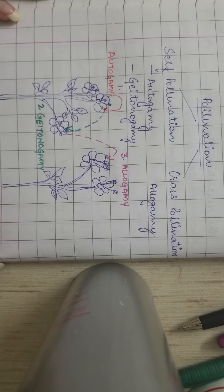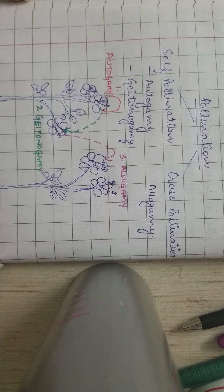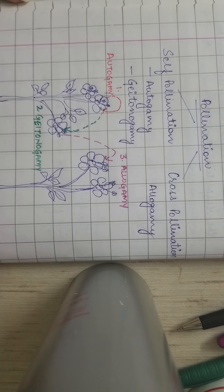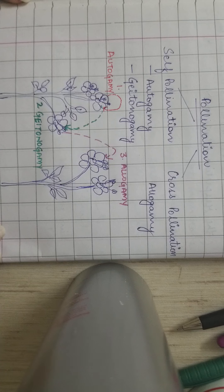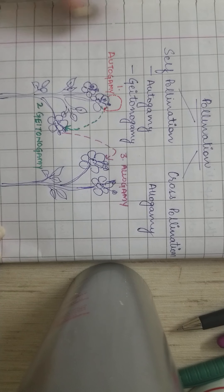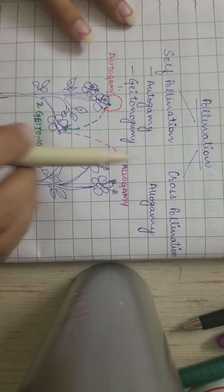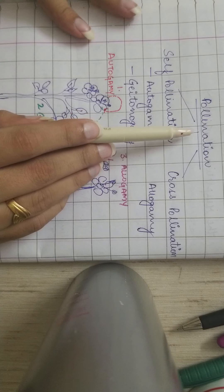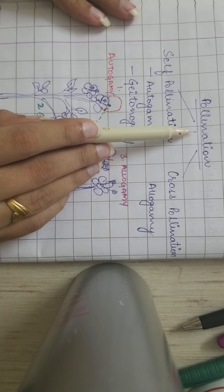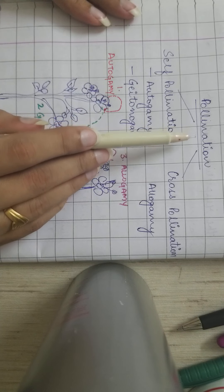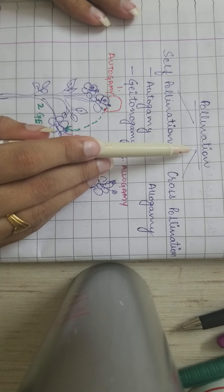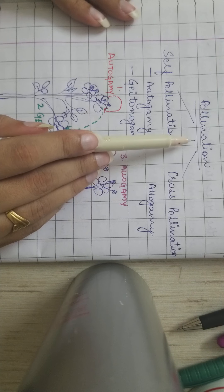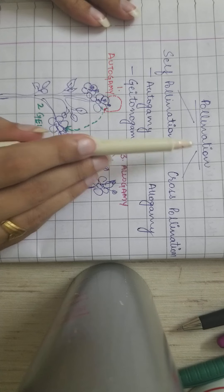Good morning everyone. Today we will be starting with the chapter pollination and fertilization. So first, what is pollination? Pollination is the process of transference of the pollen grains from anther to the stigma.